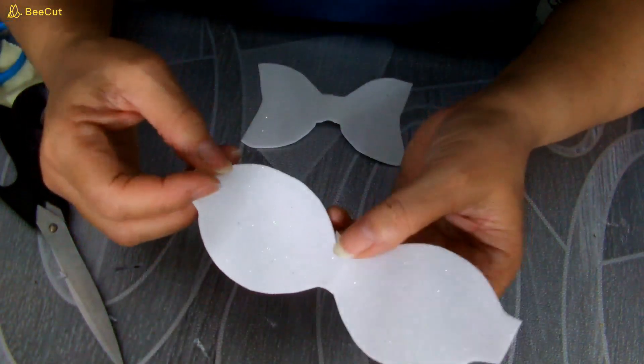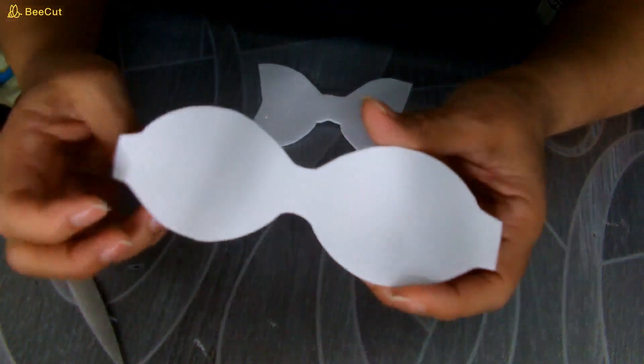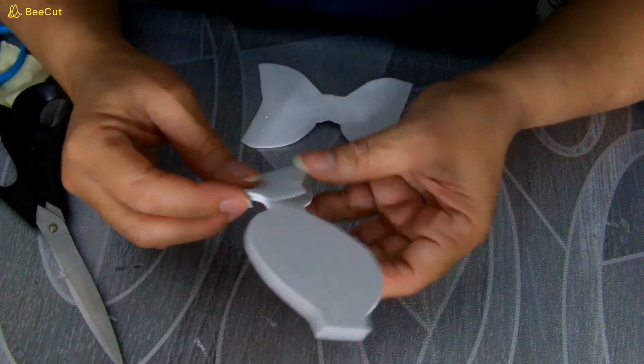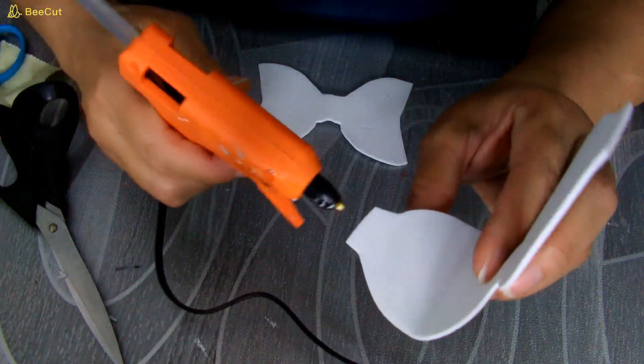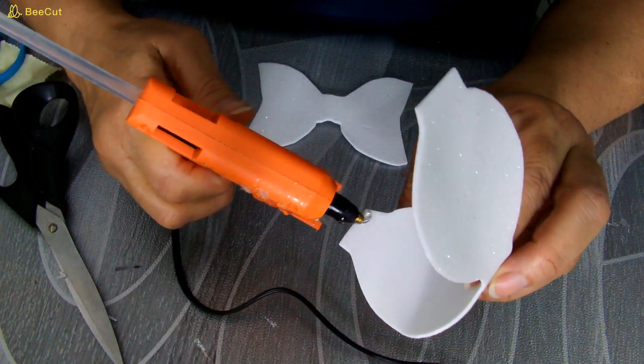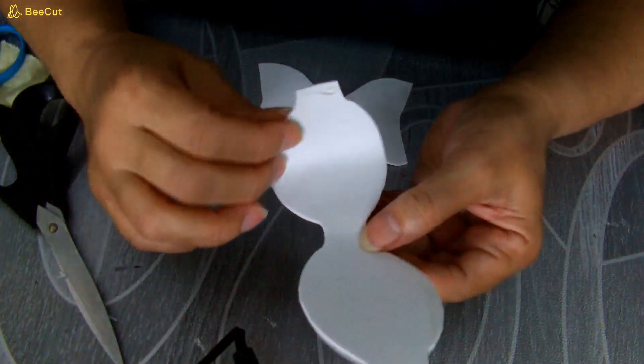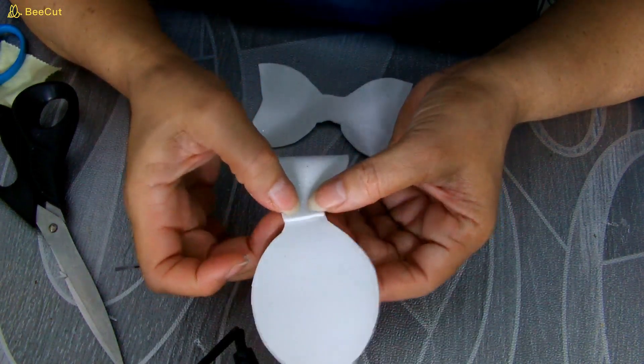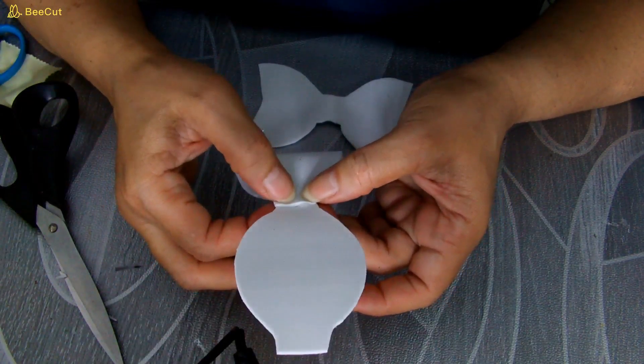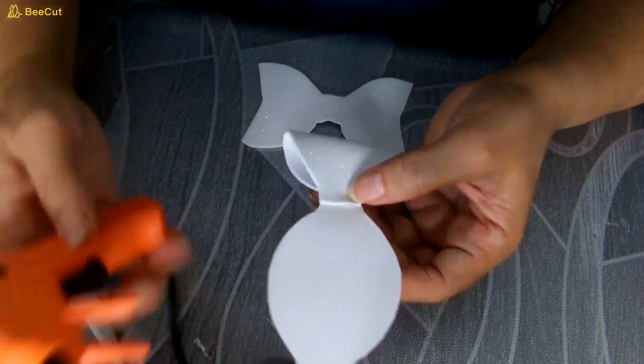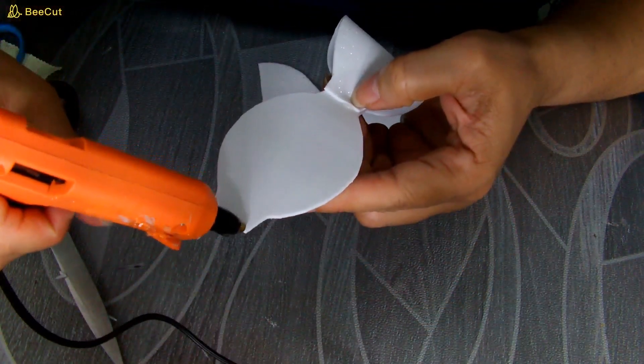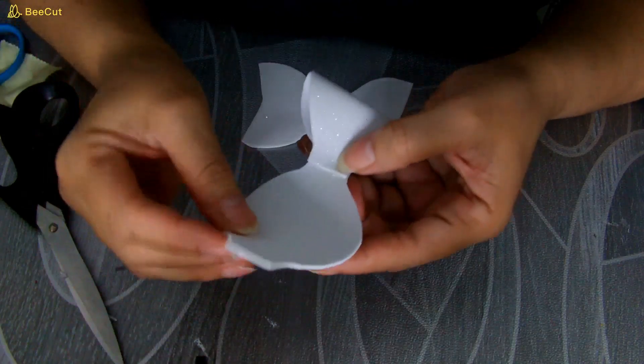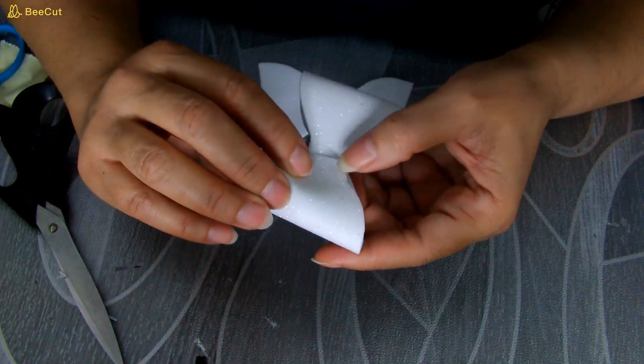Simplemente voy a coger y voy a pegar el lazo del lado al revés. Voy a pegar aquí en el mismo centro con silicón. Voy a poner un poquito de silicón acá, por aquí. Y voy a poner aquí. Voy a detener hasta que se seque o enfríe, se pegue bien. Y aquí en este extremo también voy a poner silicón así. Y lo voy a llevar aquí.